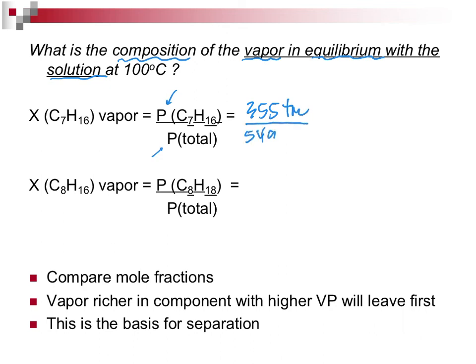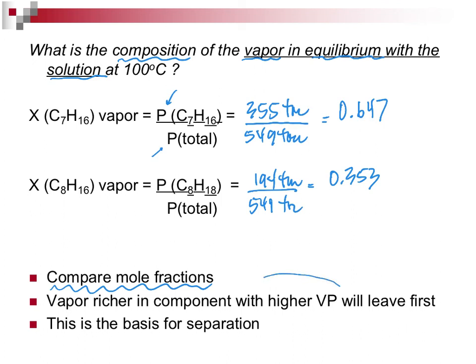That's why I said write down those individual pressures. Here's where it's hard. I want to be in the classroom. This would be across the board. I could point to it, but I can't pull that off quite as well here. 0.647, that's how much C7 there is. 194 torr over 549 torr, that's going to give me a composition of 0.353. So, if I'm going to be a real scientist, I'm going to take a look at those two mole fractions. And the vapor that's richer in the component with the higher vapor pressure, here we have the higher, richer component, higher mole fraction, it is going to leave first.